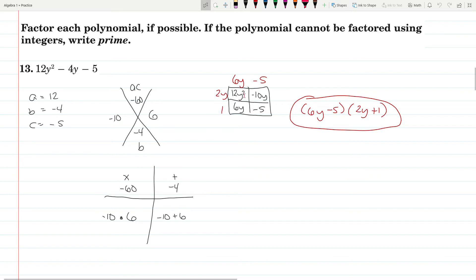Put those in. You have 12y squared and negative 5, and then you have your negative 10y and 6y. You get 6y minus 5 and 2y plus 1. And that's your solution: 6y minus 5 times 2y plus 1.